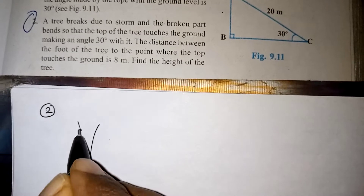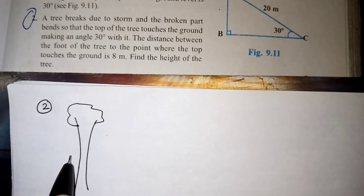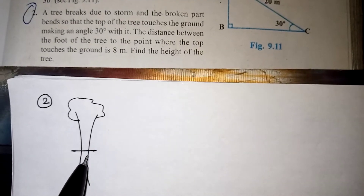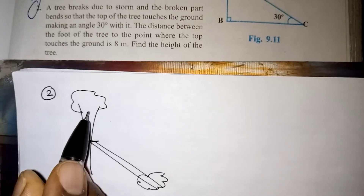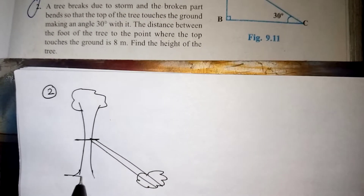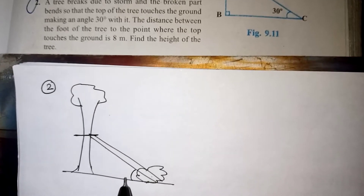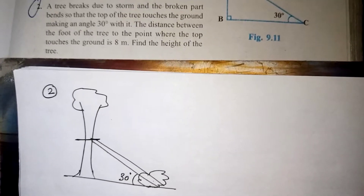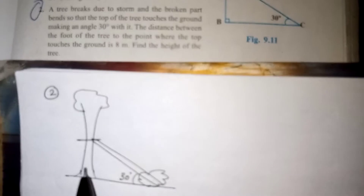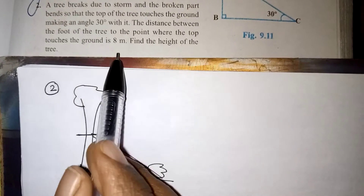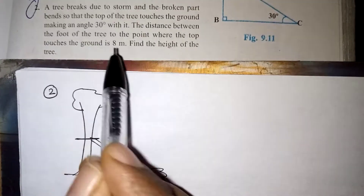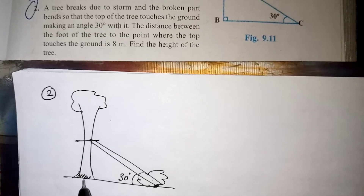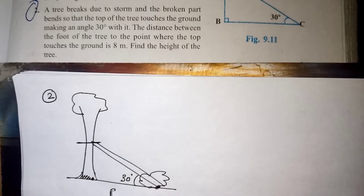So there is a tree — due to the storm it breaks somewhere in the middle and is laid down on the ground so that the top of the tree touches the ground. With the ground, the top of the tree is making a 30 degree angle. The distance between the foot of the tree and the point where the top touches the ground is 8 meters.